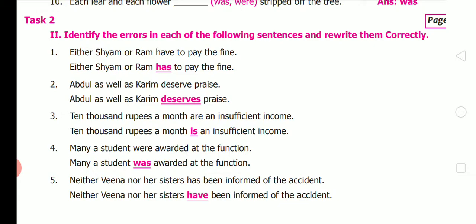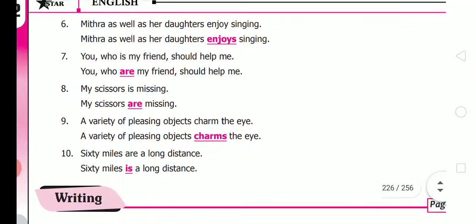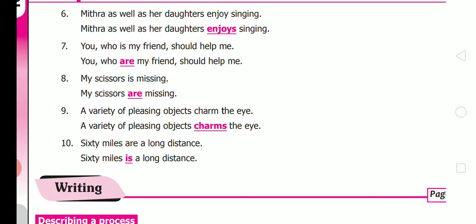Fifth: 'Neither Veena nor her sisters has been informed of the accident' — the nearby noun is 'sisters' (plural), so use 'have': 'Neither Veena nor her sisters have been informed.' Sixth: 'Mitra as well as her daughters enjoy singing' — treated as a single unit, so use 'enjoys': 'Mitra as well as her daughters enjoys singing.'